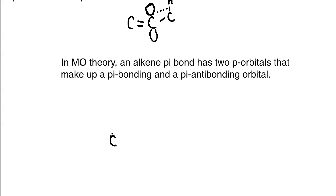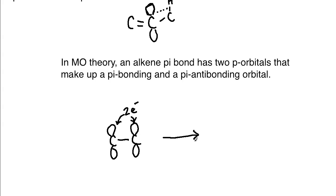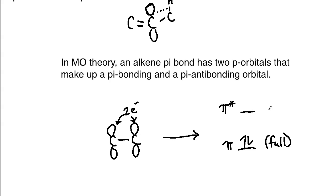The carbon has a p orbital, a sigma bond, and then the other p orbital. There are two electrons that fill up the orbitals involved in the pi bond and are shared between them. From an MO theory perspective, you have a pi bonding orbital that is lower in energy — this is filled first with our electrons — and then you get a resulting pi antibonding orbital, represented with a star.